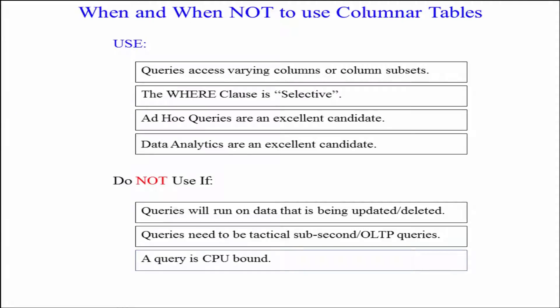When do you use columnar tables? Use them when queries access varying columns or column subsets, the WHERE clause is quite selective, for ad hoc queries, and for data analytics. Do not use columnar tables if queries run on data that is being updated or deleted frequently, if queries need to be tactical sub-second OLTP type queries, or if the query is CPU bound.